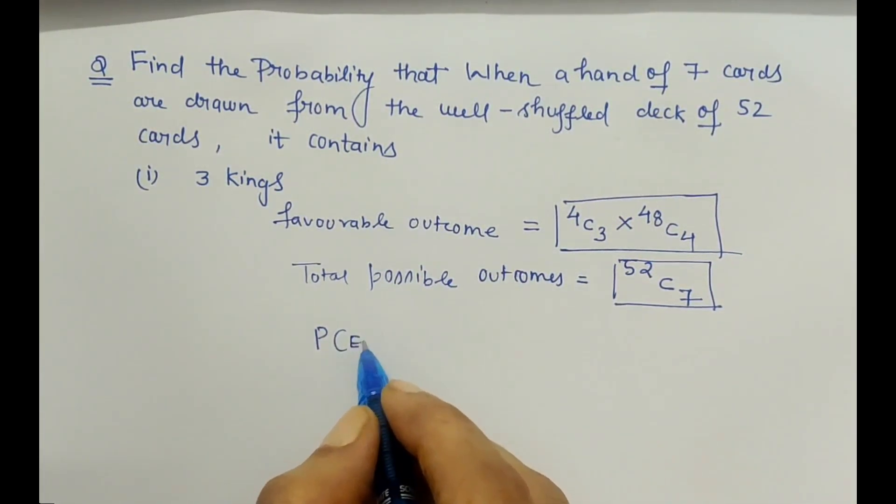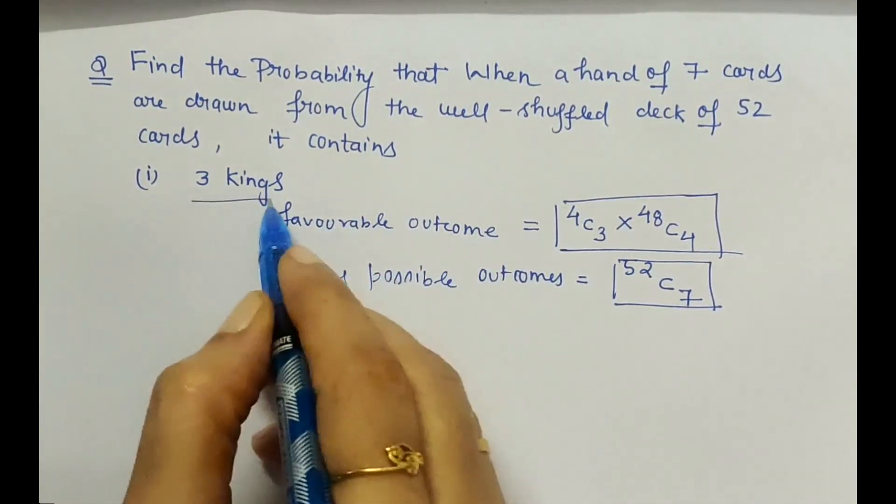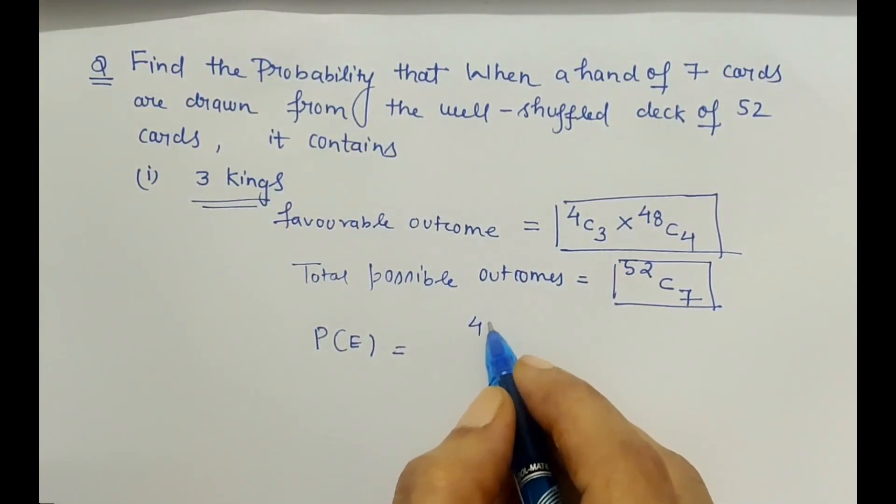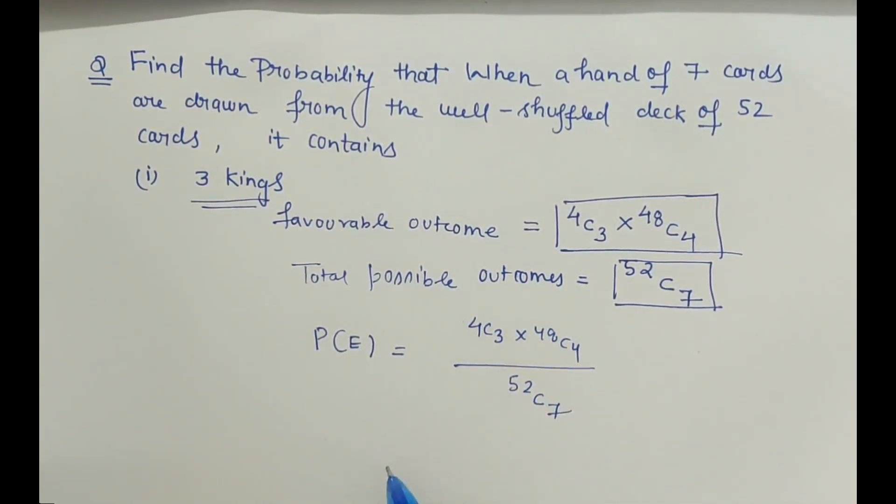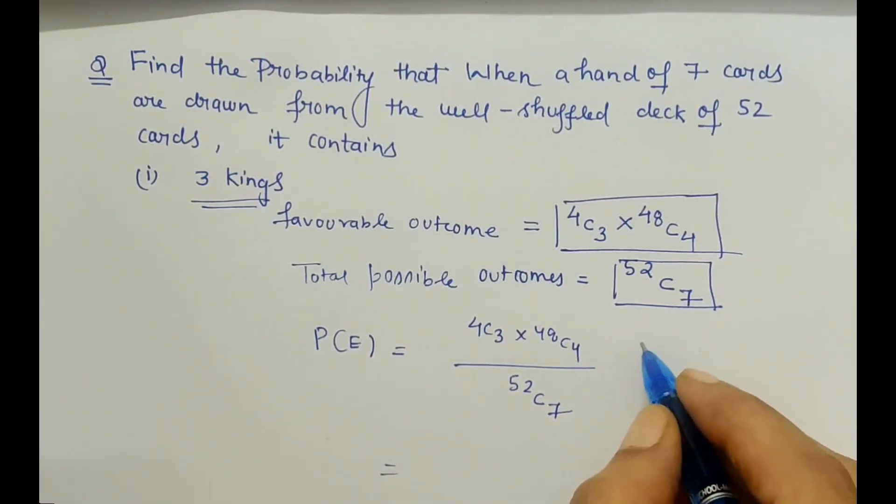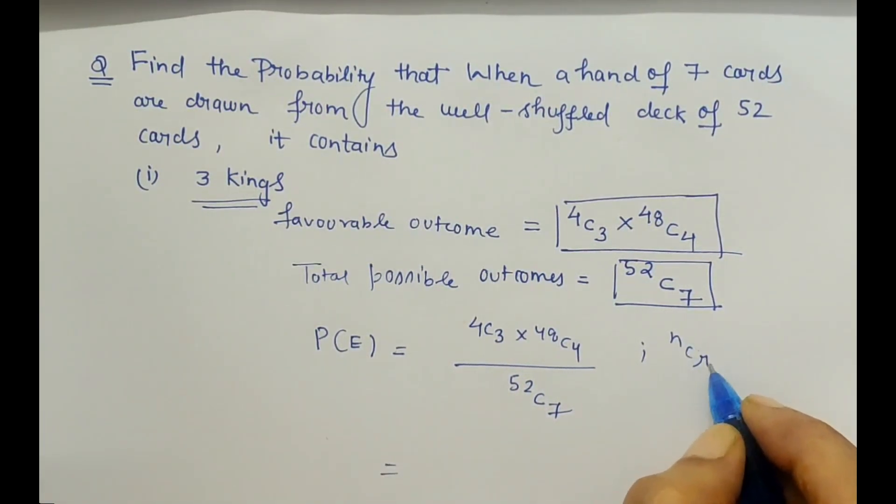So probability of the event, the required event that is three kings, is 4C3 times 48C4 upon 52C7. We just have to calculate this. 4C3 - we know the formula nCr is n factorial upon n minus r factorial times r factorial.